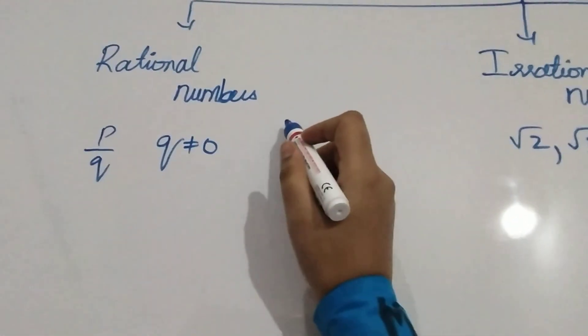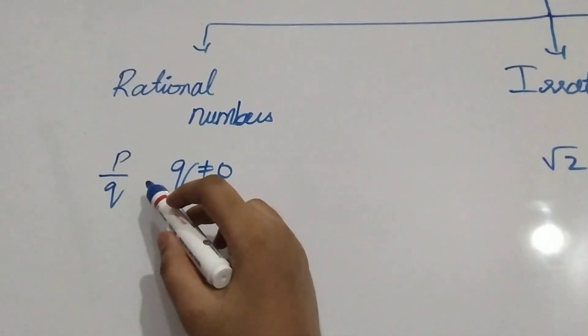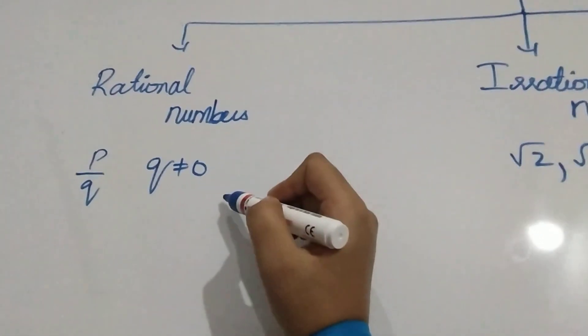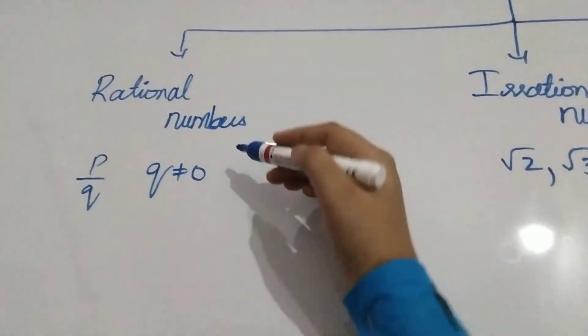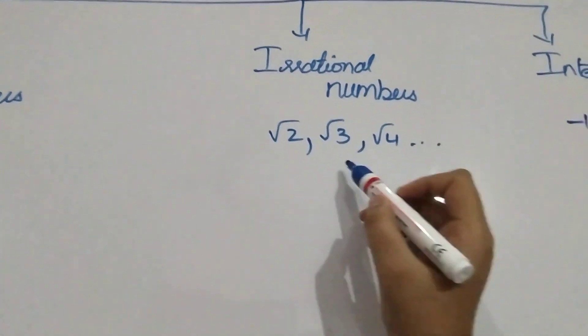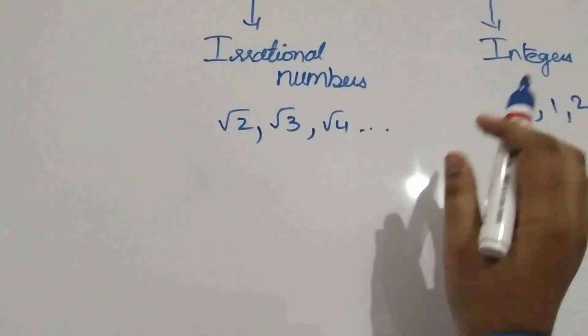What are rational numbers? The numbers that can be represented in the form of P by Q, where Q is not equal to 0, are known as rational numbers. The irrational numbers are root 2, root 3, root 4, so on till infinity.